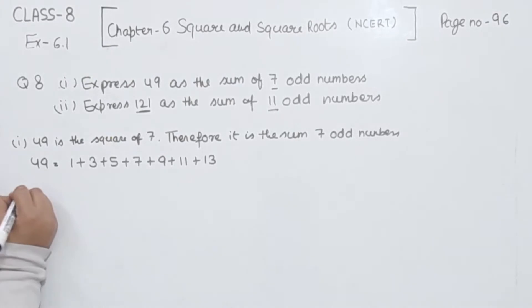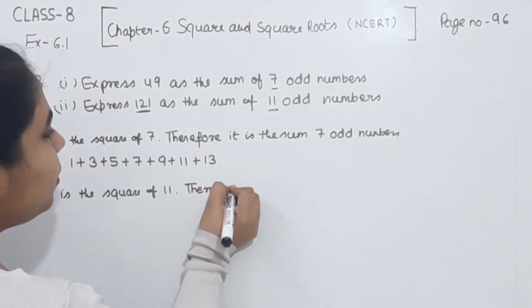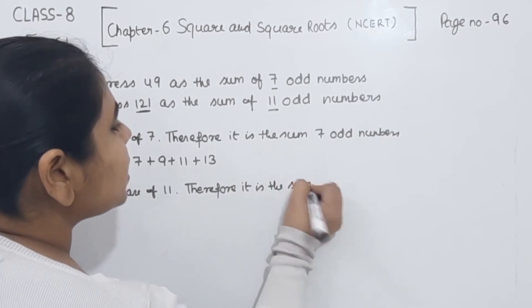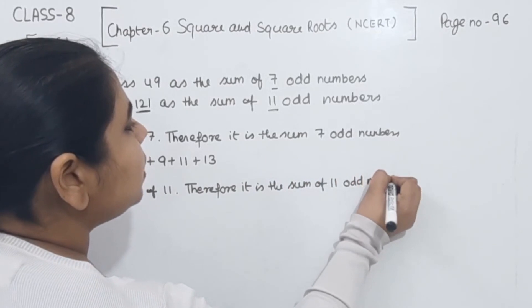Now comes part 2. The number we have is 121, and 121 is the square of 11. Therefore, it is the sum of 11 odd numbers.